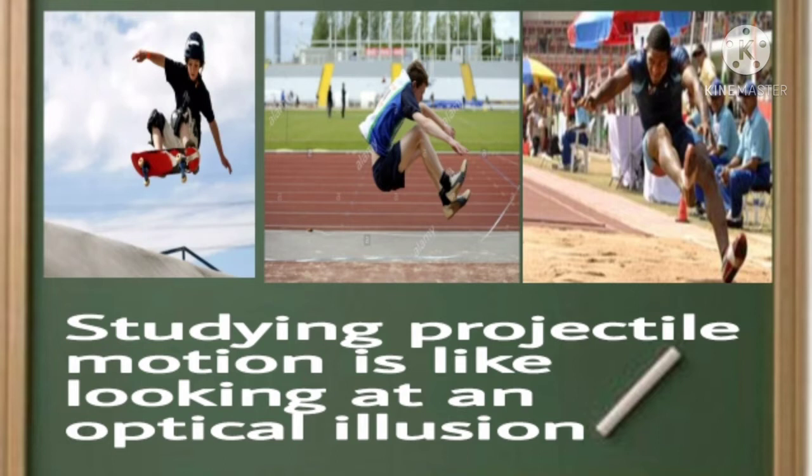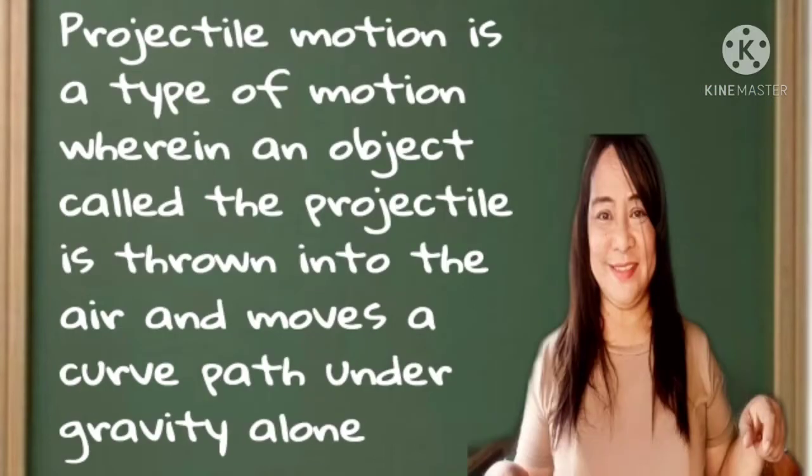Studying projectile motion is like looking at an optical illusion. Now let us first define what projectile motion is. Projectile motion is a type of motion wherein an object called the projectile is thrown into the air and moves a curved path under gravity alone.